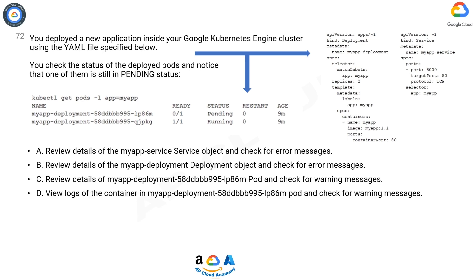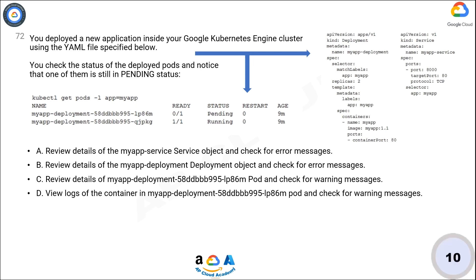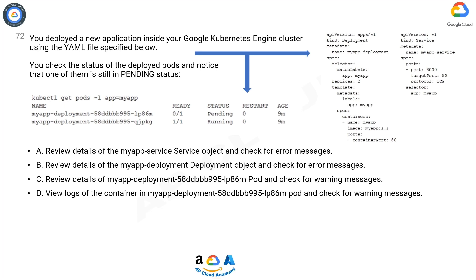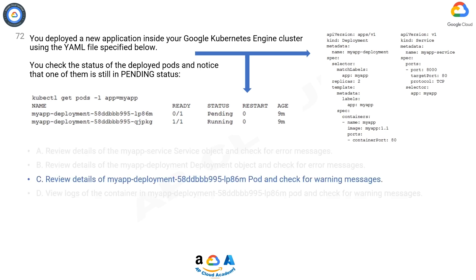Option D: View logs of the container in my-app-deployment-58-ddbbb995-lp86 pod and check for warning messages. Now take 10 seconds to think about the answer. The correct answer is C.